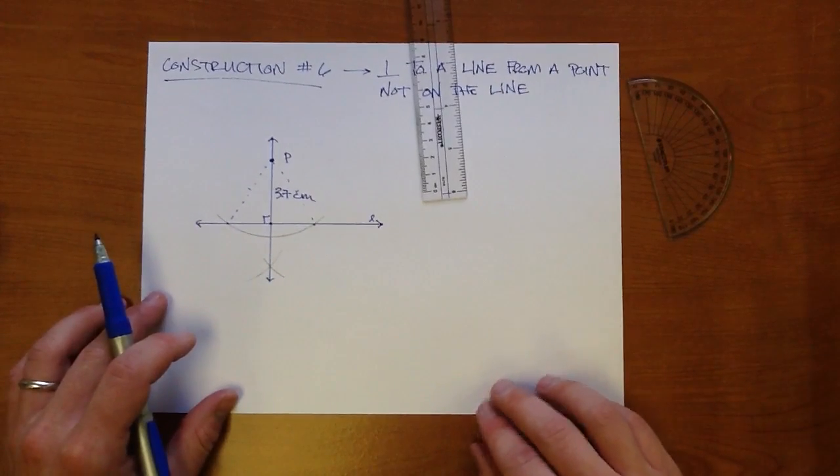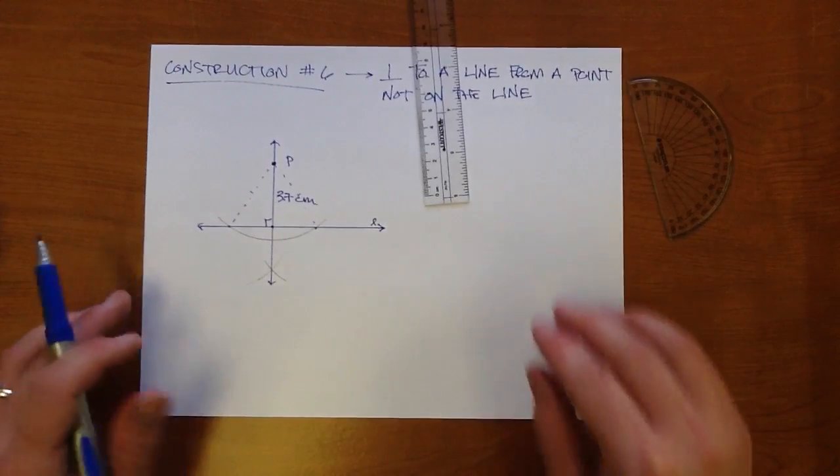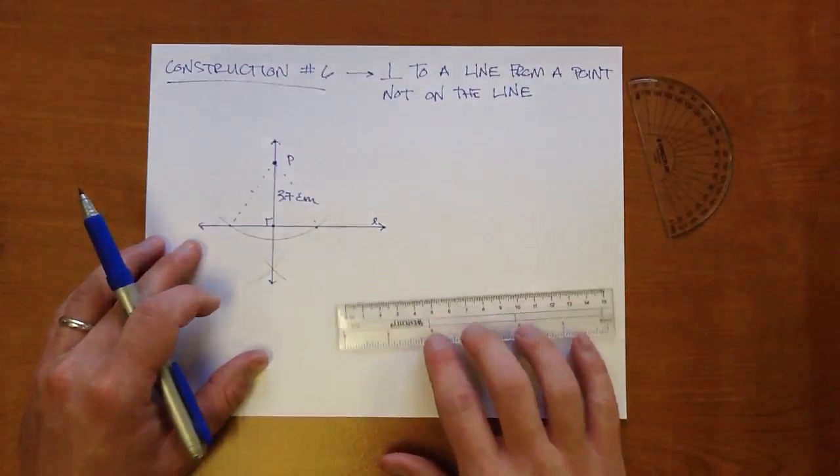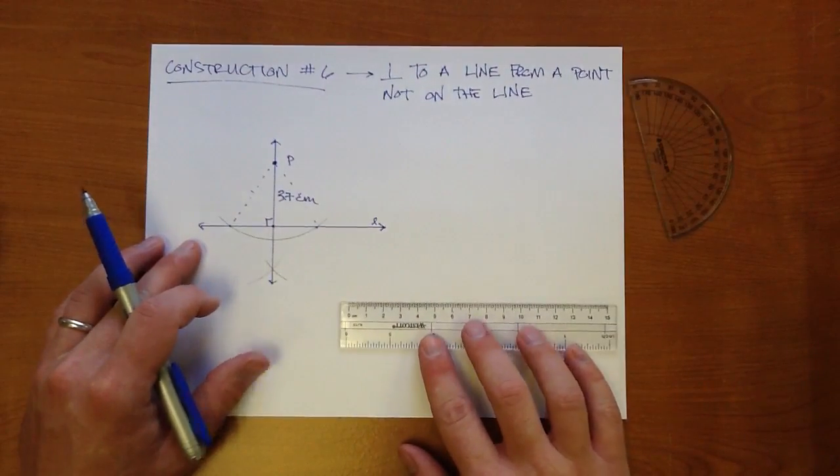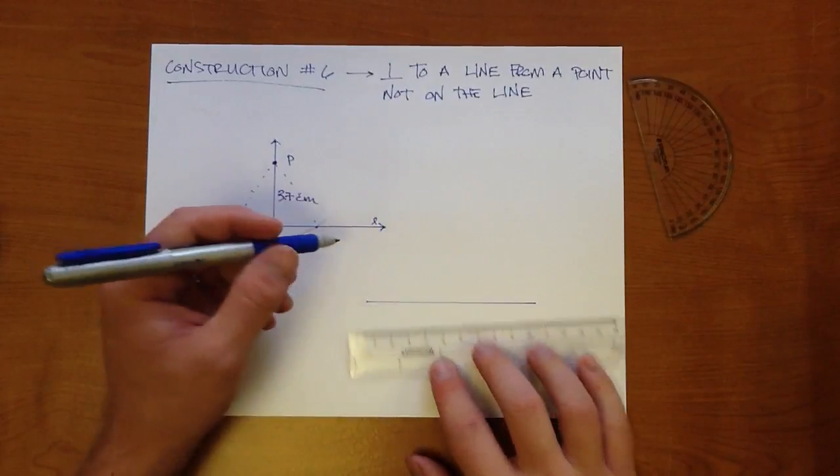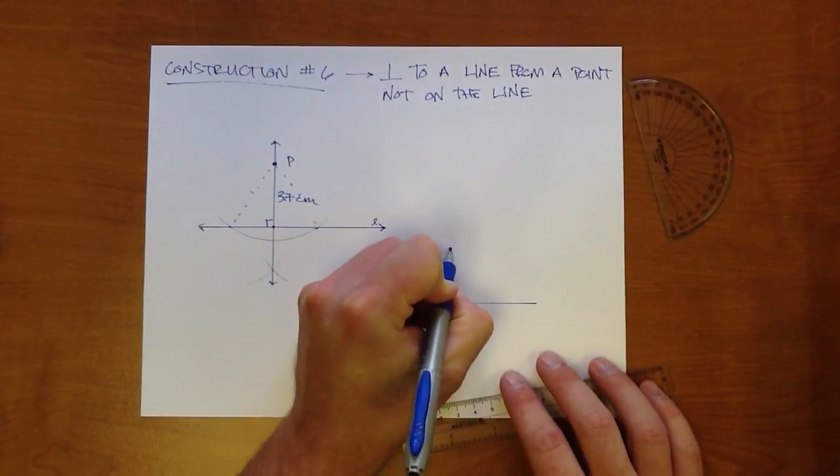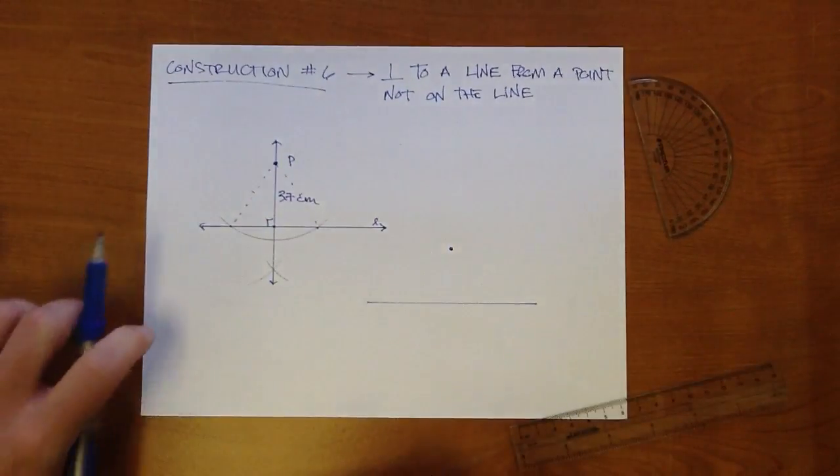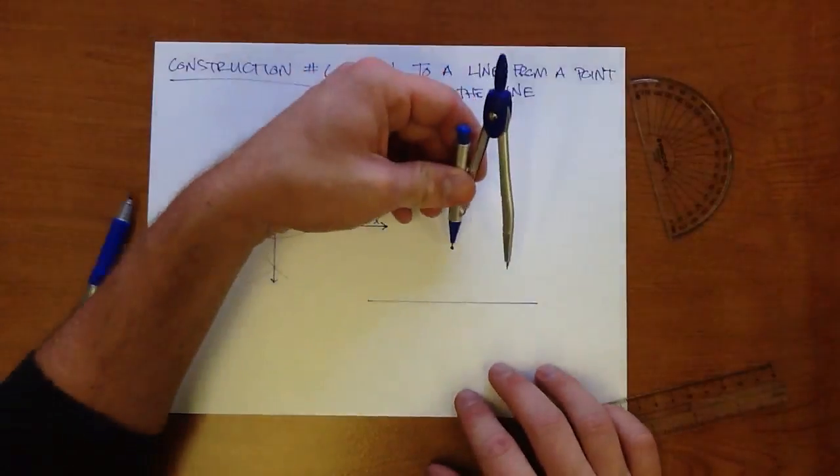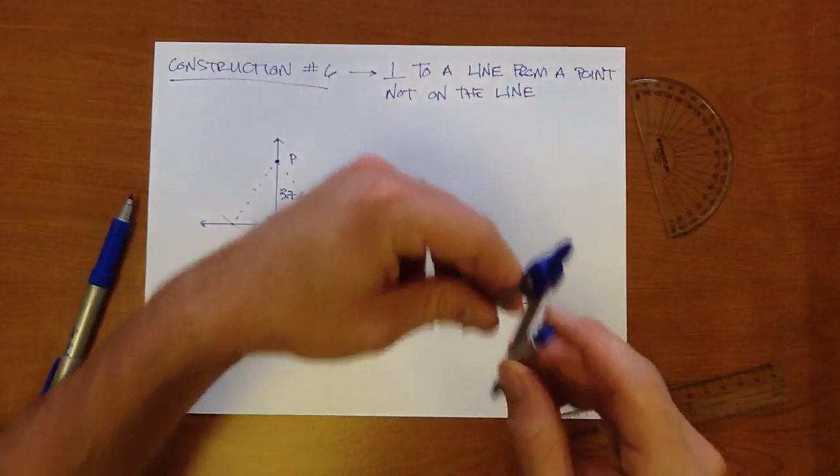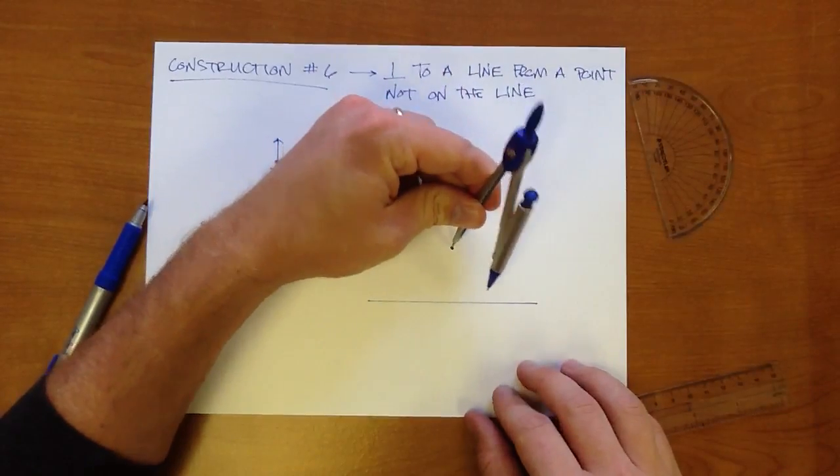Those are the different types of things you may have to do for the construction. Really, this should be just an extension of what we did before. So just to run through it again real quickly, if you have some point not on a line when you're doing this construction, make sure the big thing is this first arc right here.